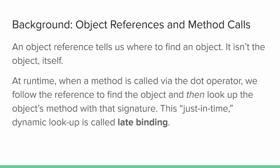Let's start by reviewing what an object reference actually is, and what happens when an object is created. An object reference tells us where to find an object stored somewhere else in memory — it isn't the object itself. When we call methods or access variables using an object reference and the dot operator, we are actually following the address to the actual object and accessing the method or variable there. This just-in-time dynamic access is called late binding.